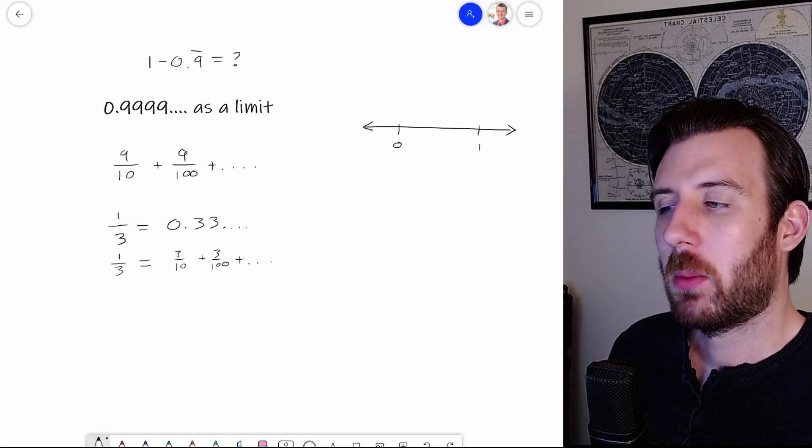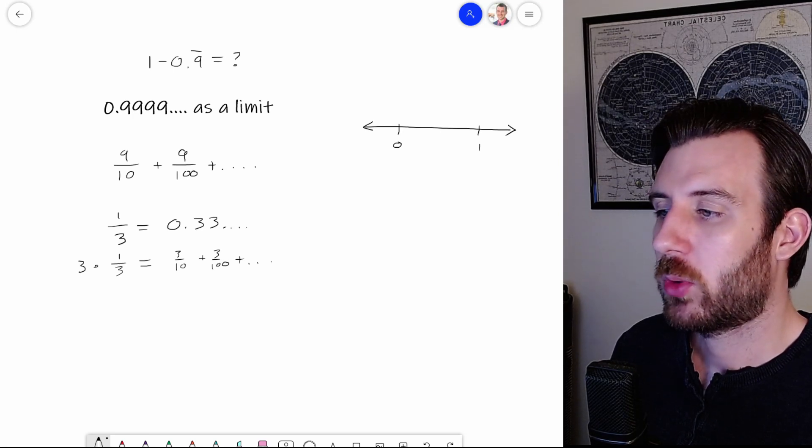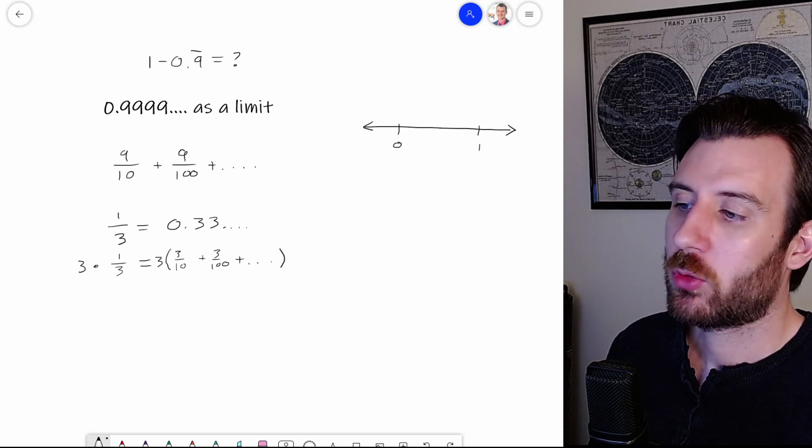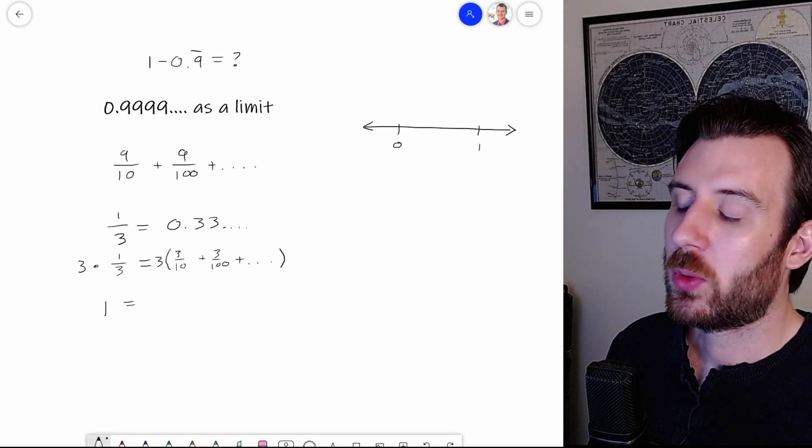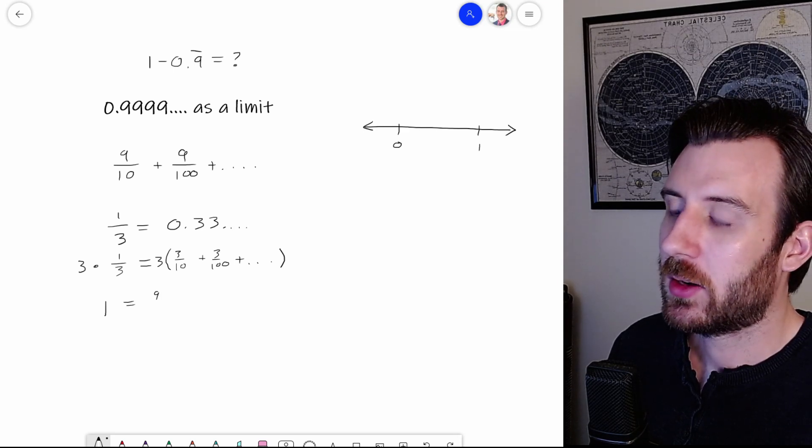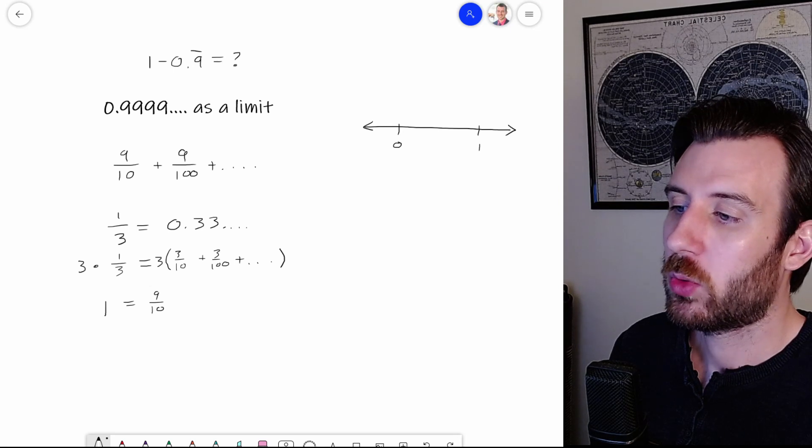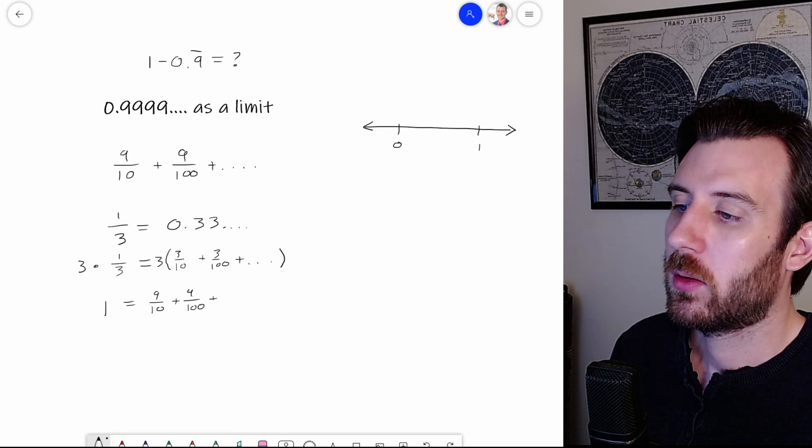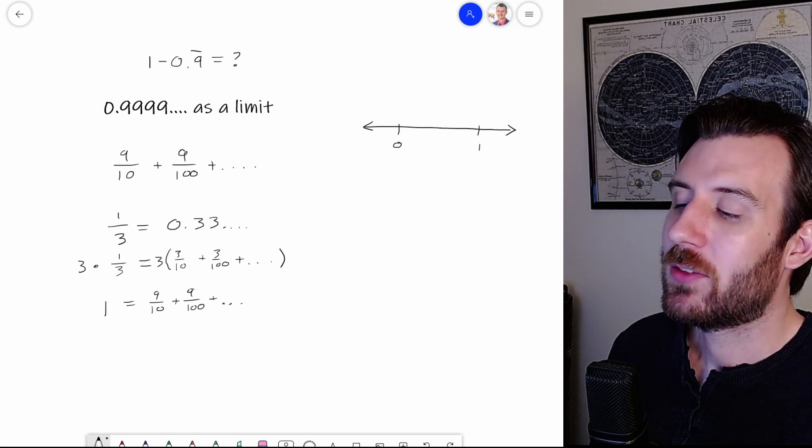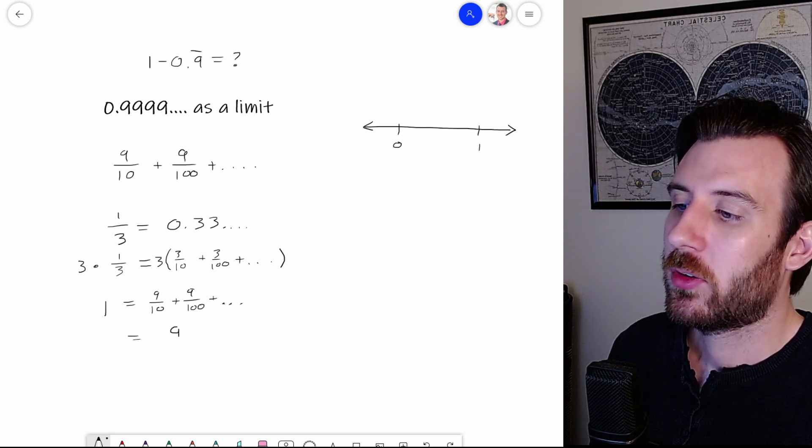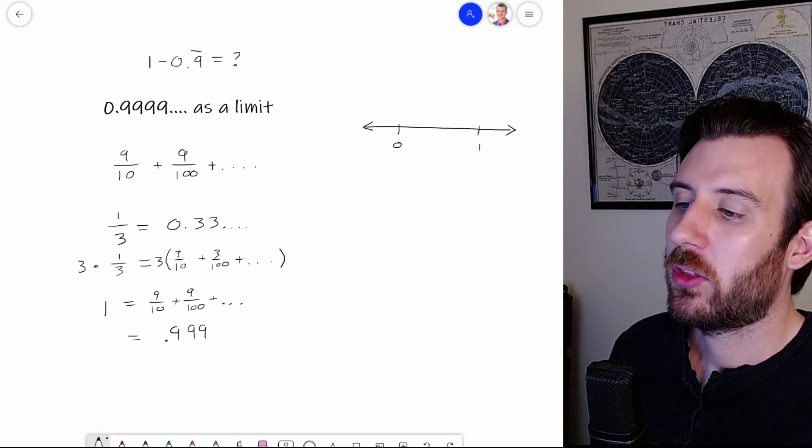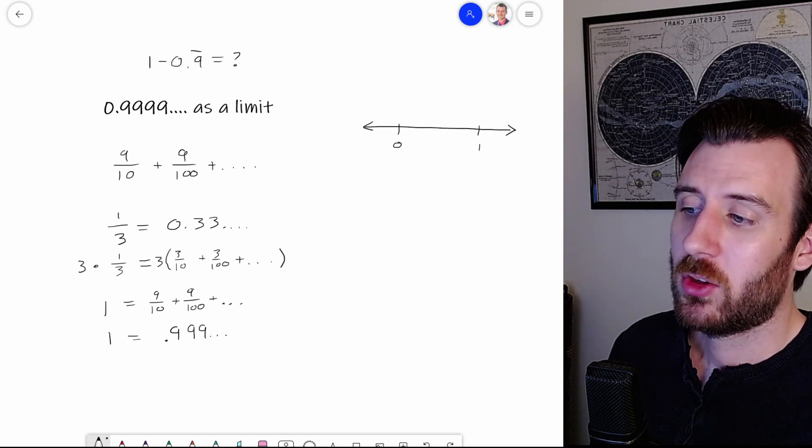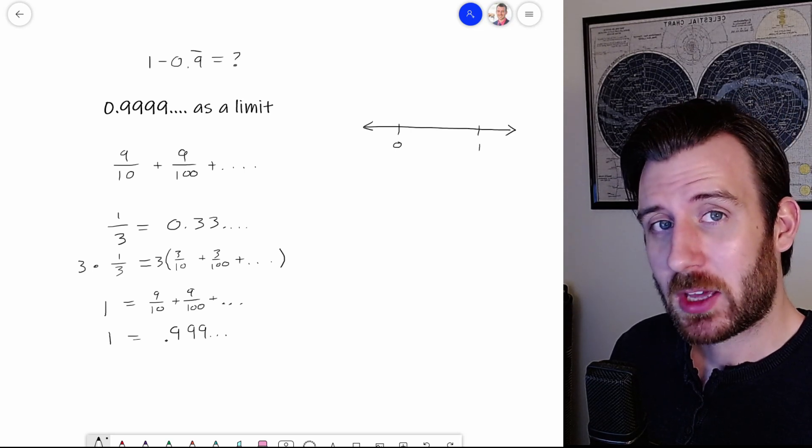Now here's where things get fun. What if I was to multiply both sides by 3? So I'll do 3 times 1 third and 3 times all of this. Well, 3 times 1 third would be 1. 3 times 3 tenths would be 9 tenths. 3 times 3 hundredths would be 9 hundredths. And we would continue on. And if you put 9 tenths, 9 hundredths, 9 thousandths, et cetera, you get 0.9 repeating. So the question becomes, is 1 the same thing as 0.9 repeating?